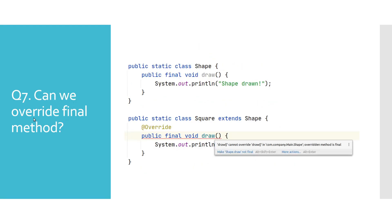Can we override final methods? The final keyword is used to restrict extending of classes and overriding of methods in Java. A method defined with the final keyword is also known as a final method. This allows developers to enforce the constraint where re-implementing a method in a subclass cannot be done.